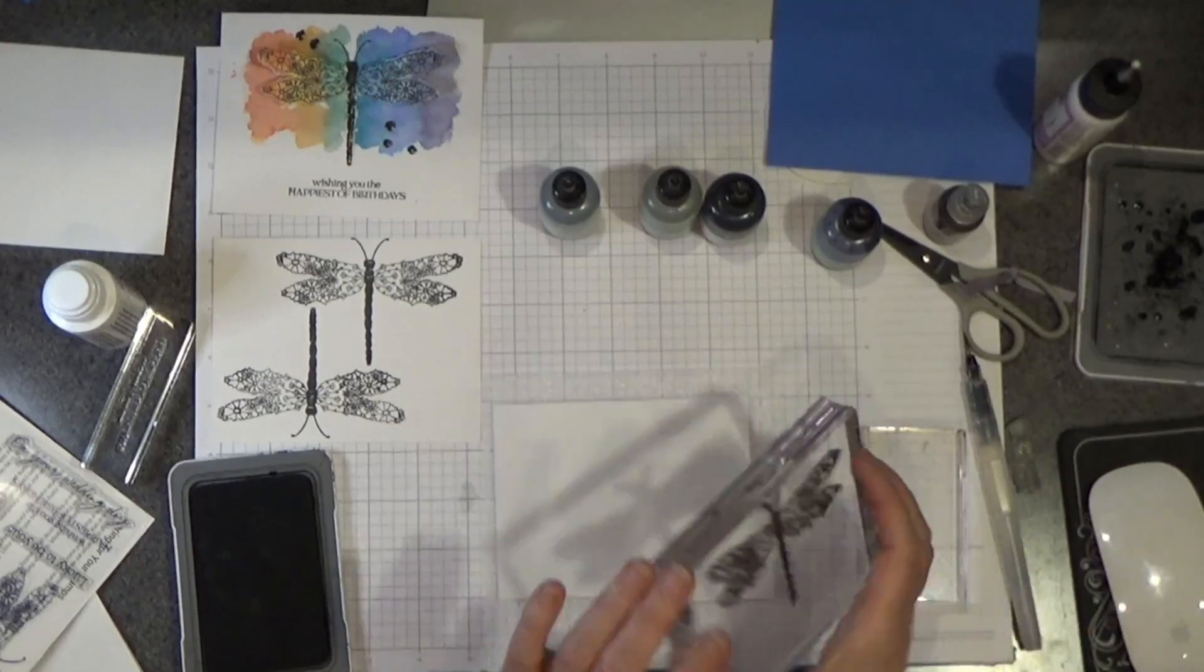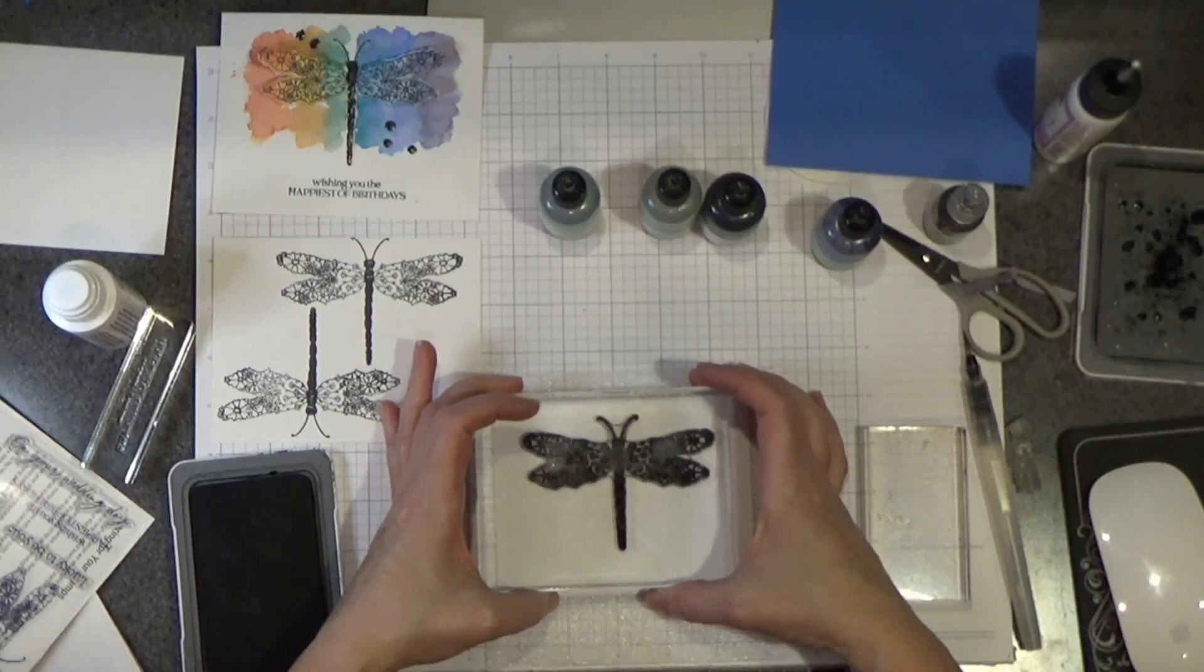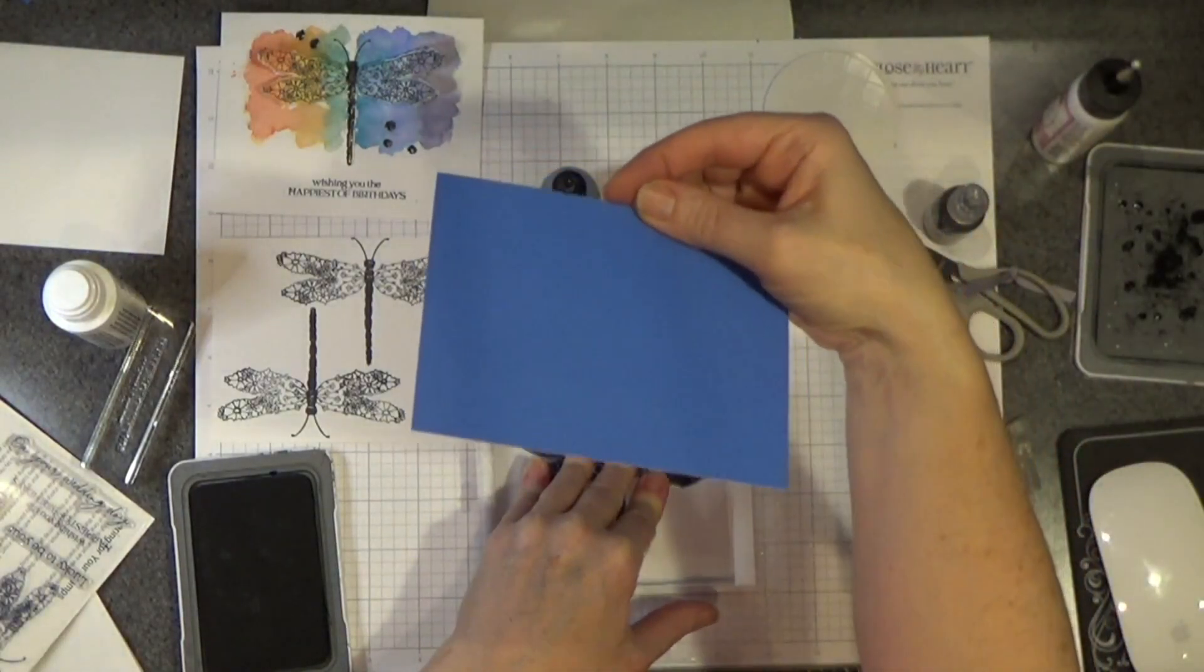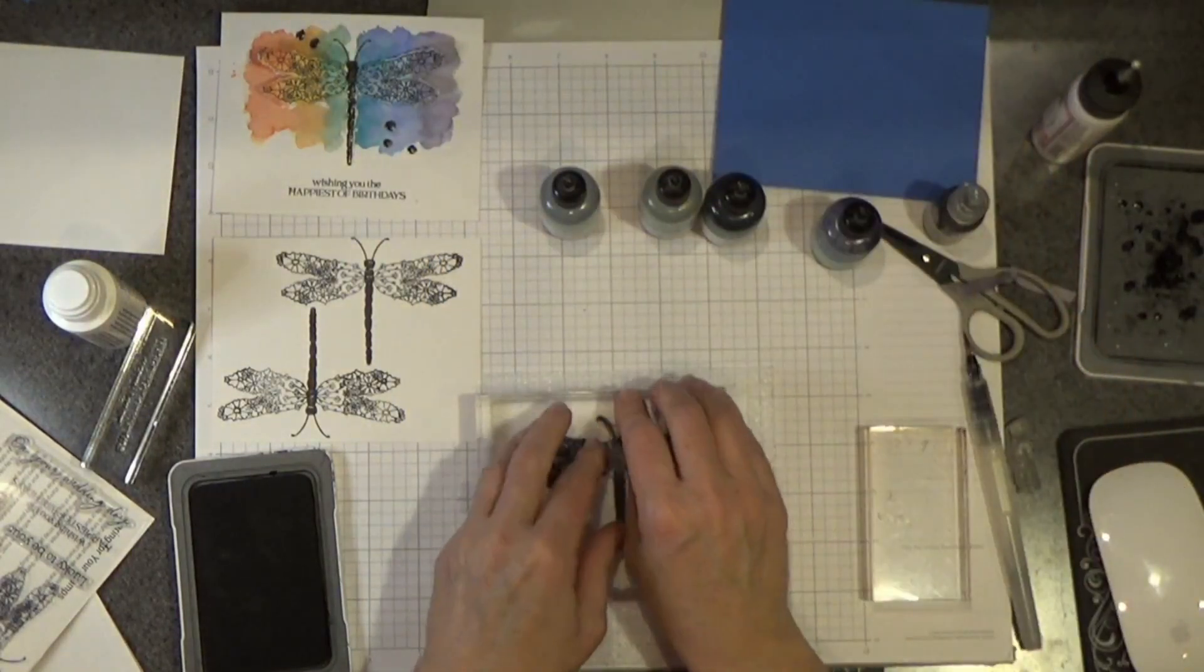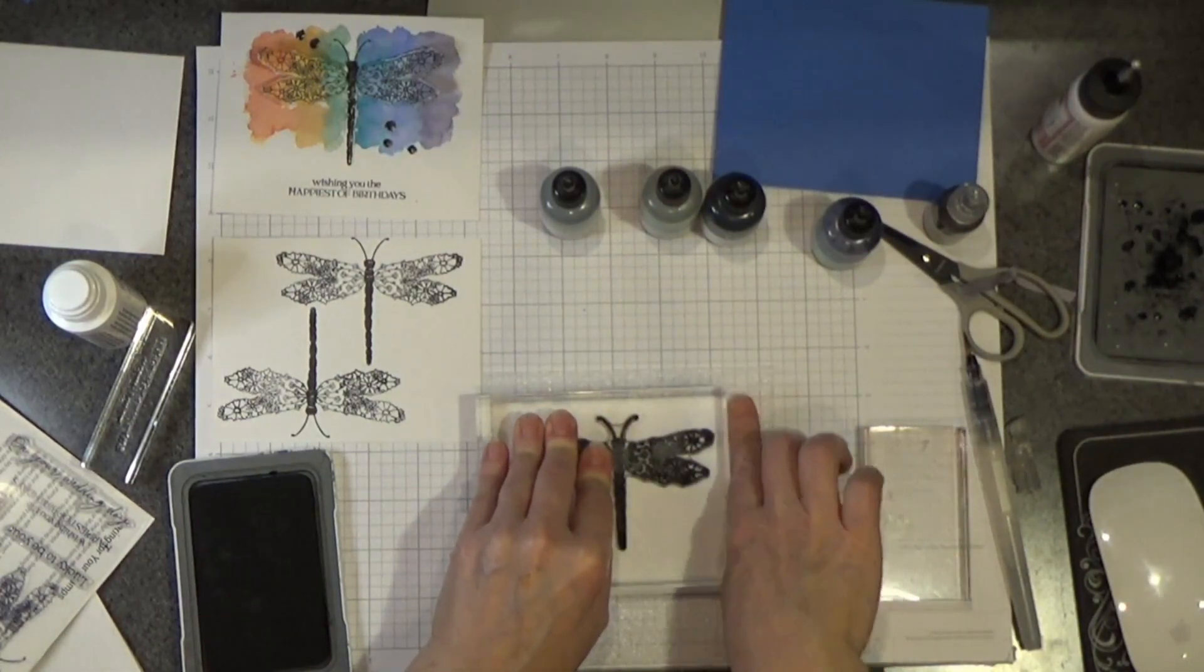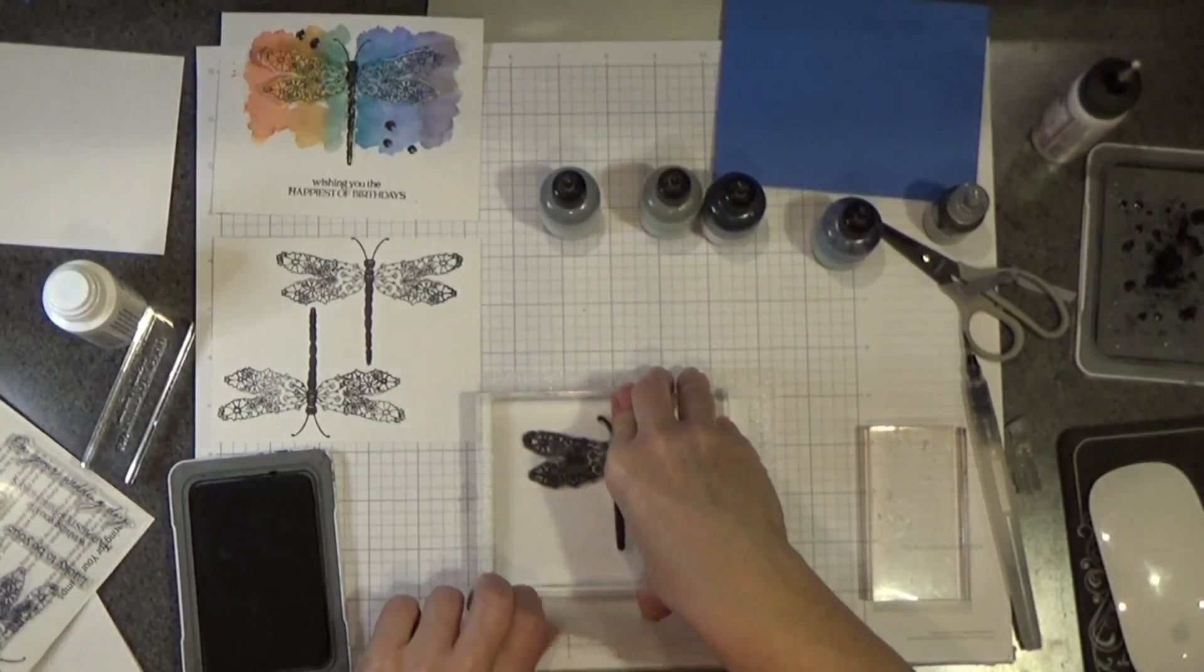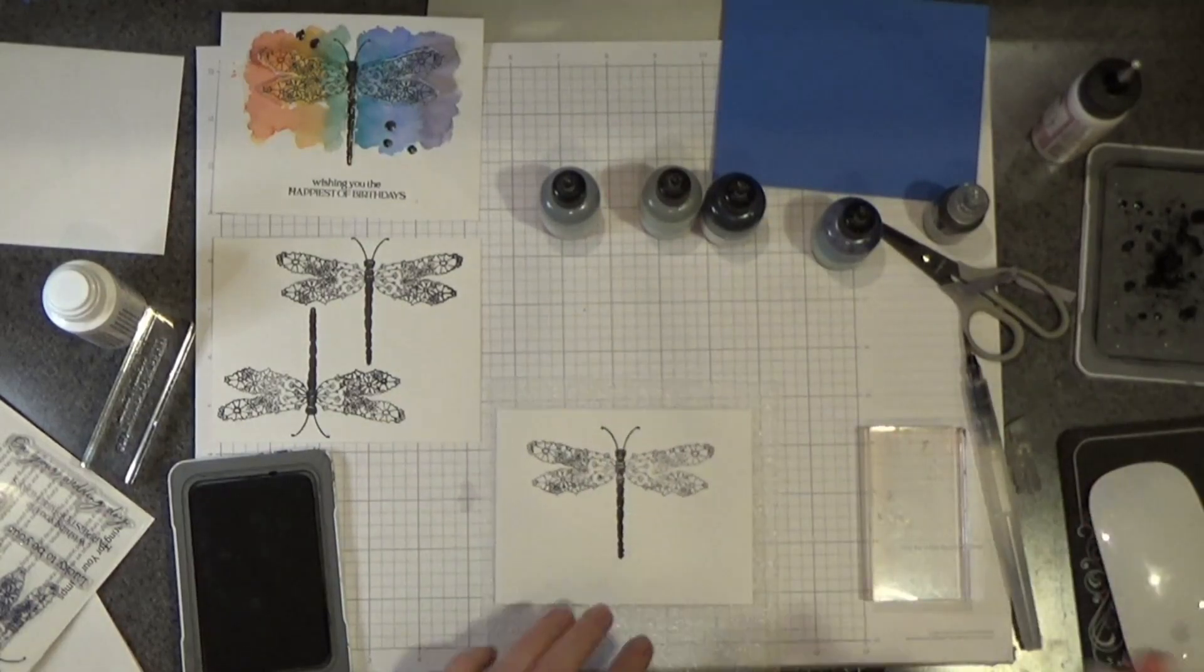I'm going to stamp this for placement. I did cut this panel to four by five and a quarter and I have a four and a quarter by five and a half inch piece of the bluebird cardstock to use underneath it for layering. Our watercolor paper is the Tim Holtz watercolor paper. It has some texture to it so that's why I'm giving it some extra pressure and I do have my little foam pad that comes in all of our stamp sets and that doesn't look too bad.